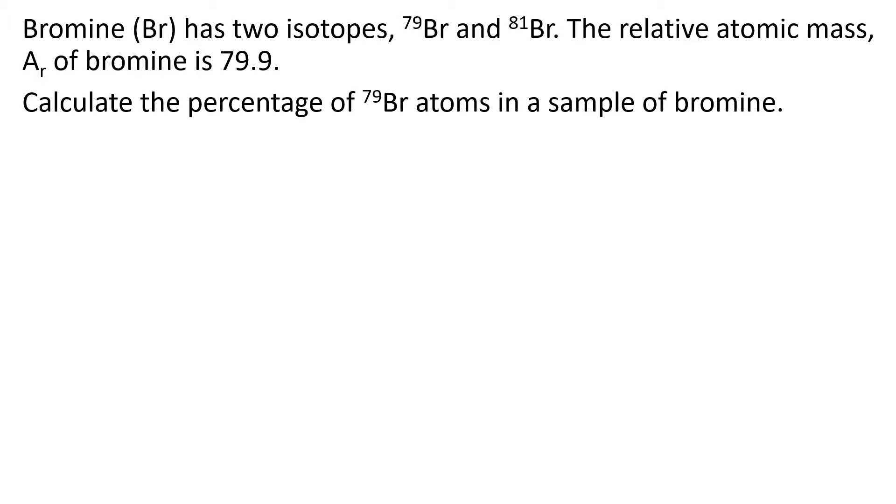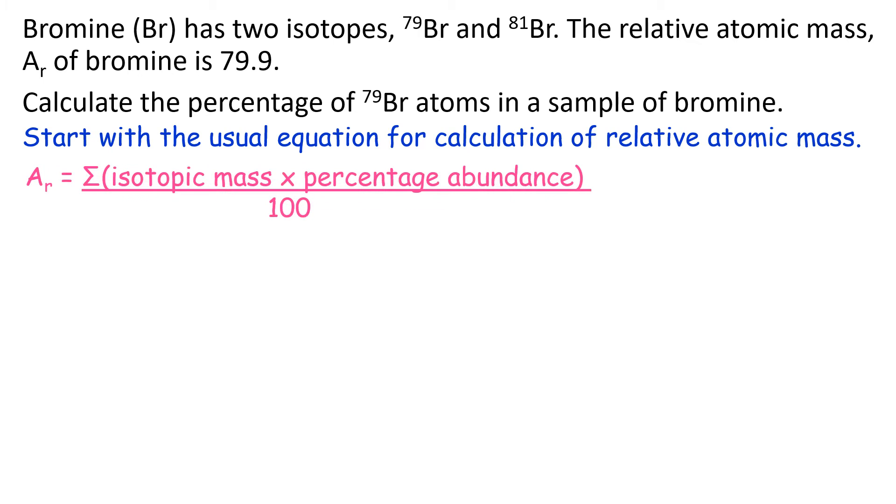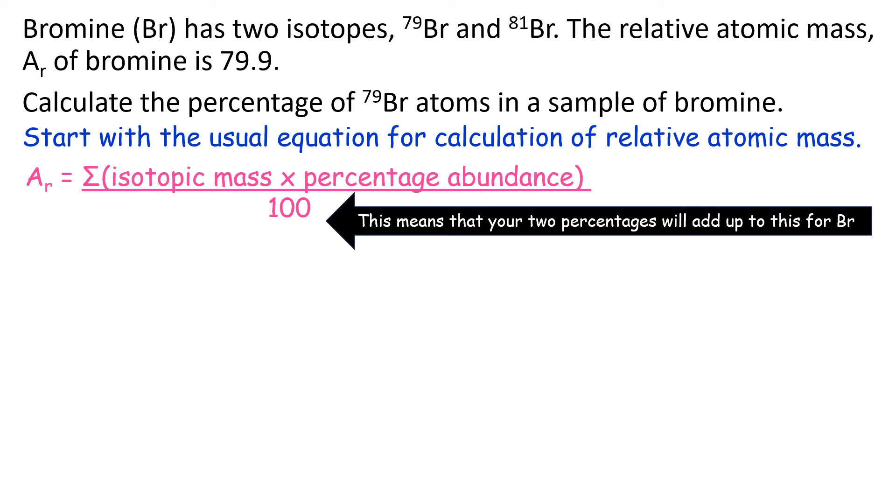What they want is the percentage of 79 Br atoms in a sample of bromine. So you start with the usual equation for the calculation of relative atomic mass, which is the sum of the isotopic mass times the relative percentage abundance over 100.